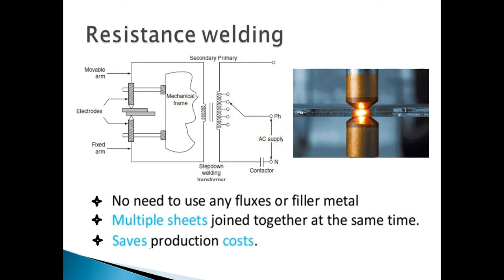Two electrodes are placed: one is a movable electrode and one is a fixed arm electrode. The metals we want to weld — similar or dissimilar — are placed between them. We adopt resistance welding because it offers key features: no need for any filler material, multiple sheets can be joined together at the same time, and it saves production cost significantly.